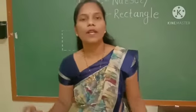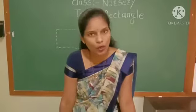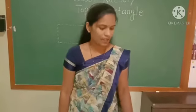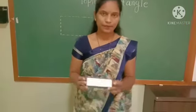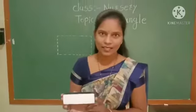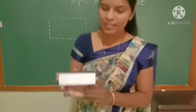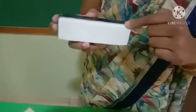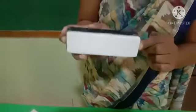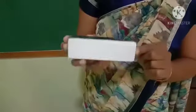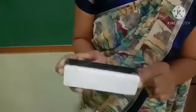बच्चो, अब हम rectangle shape से रिलेटेड कुछ objects देखेंगे. What is this? This is the duster, and this duster's shape is rectangle shape. These two sides are long and these two sides are short. This is the duster and it is in rectangle shape.